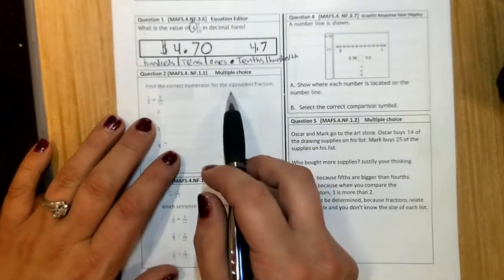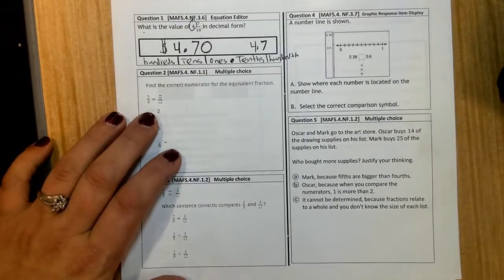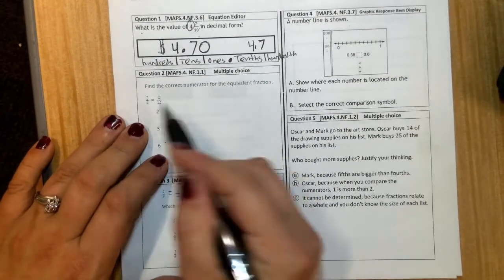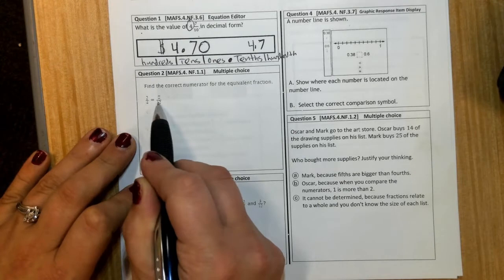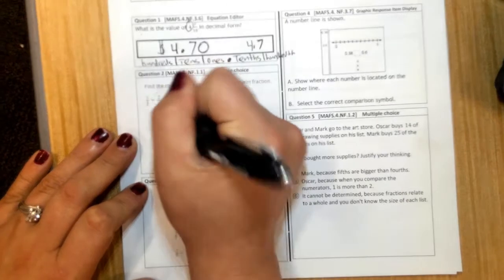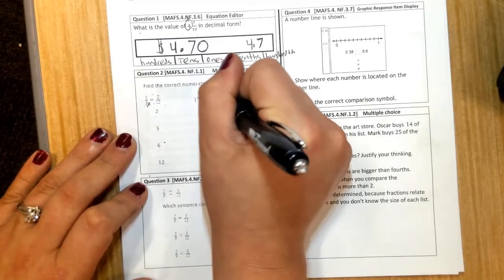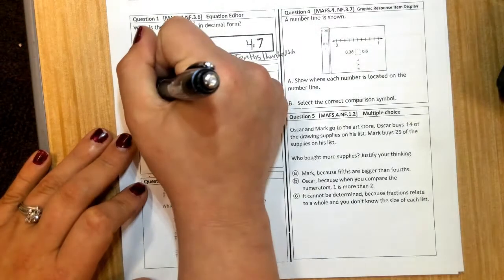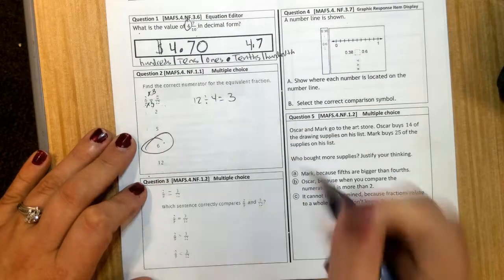Number 2, find the correct numerator for the equivalent fractions. We have a couple strategies that we can use. The first strategy is working backwards. We went from a 4 to a 12. Remember, if we multiply fractions, whatever we do to the bottom, we must do to the top. What do we multiply 4 by in order to get 12? 12 divided by 4 equals 3. So if we multiply by 3 to the bottom, we need to multiply by 3 to the top. So our numerator should be 2 times 3 is 6.